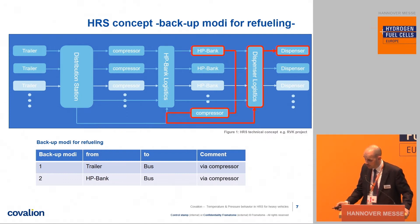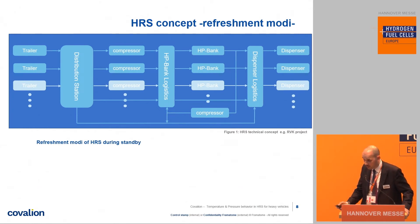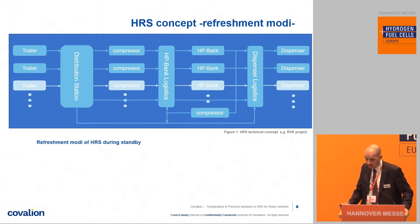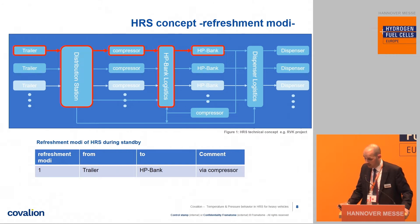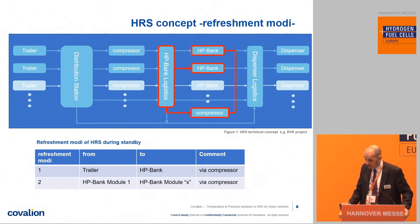Similarly, if the pressure level is too low in the hydrogen bank, we can use the compressor unit to refill the bus. There is a third mode I call the refreshment mode. It operates during standby — when no bus refueling is ongoing. If there is a low level in one of our pressure vessels, for example in the trailer, we can use the compressor unit to bring hydrogen to a higher pressure in the HP bank, or we can do a shuffle mode, moving hydrogen from a low-pressure bank through the compressor to a higher pressure level.